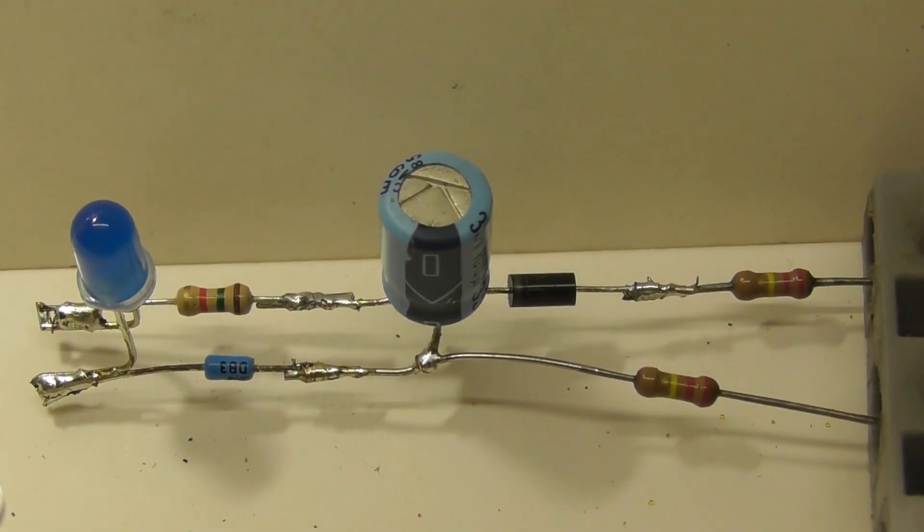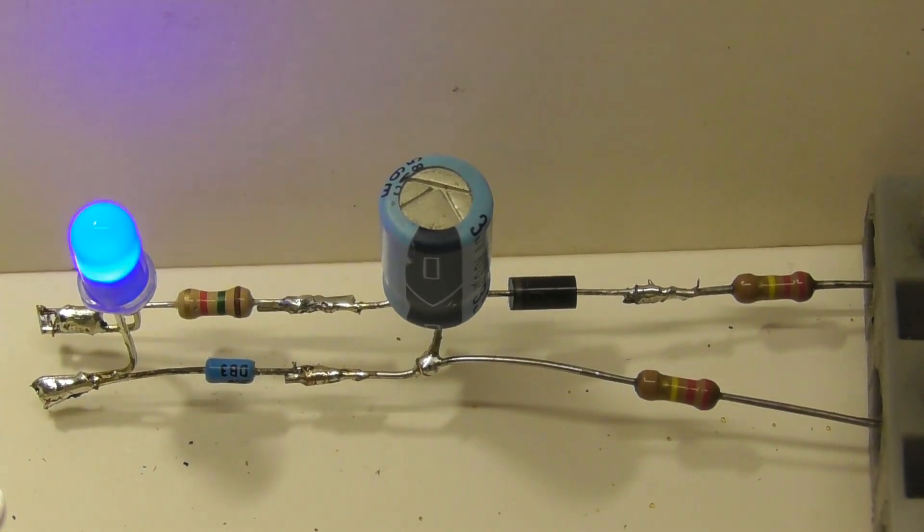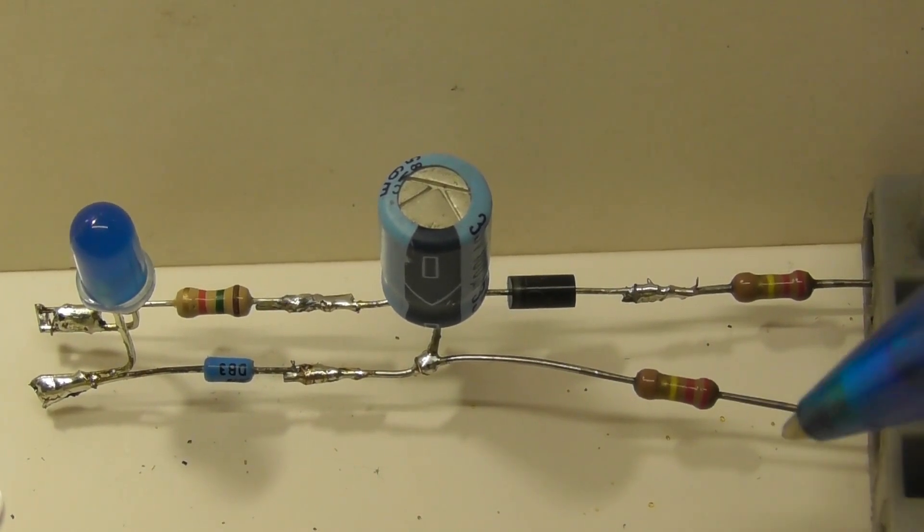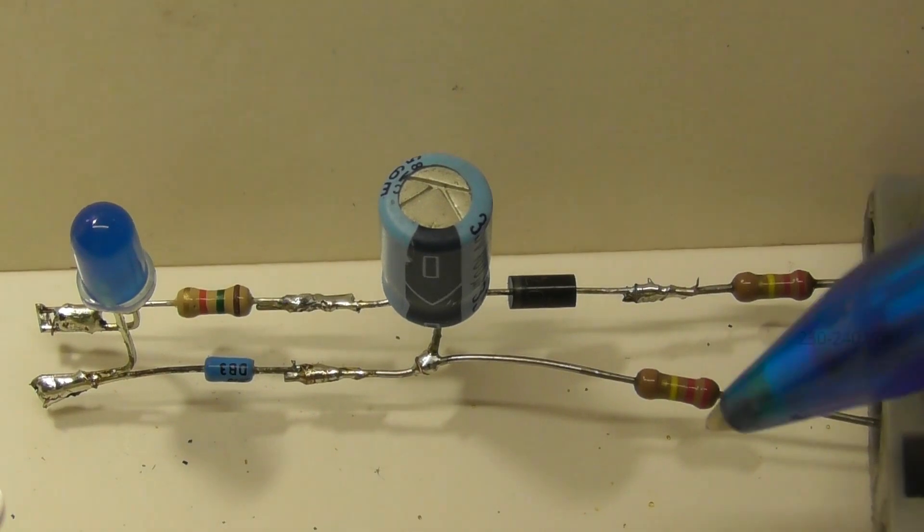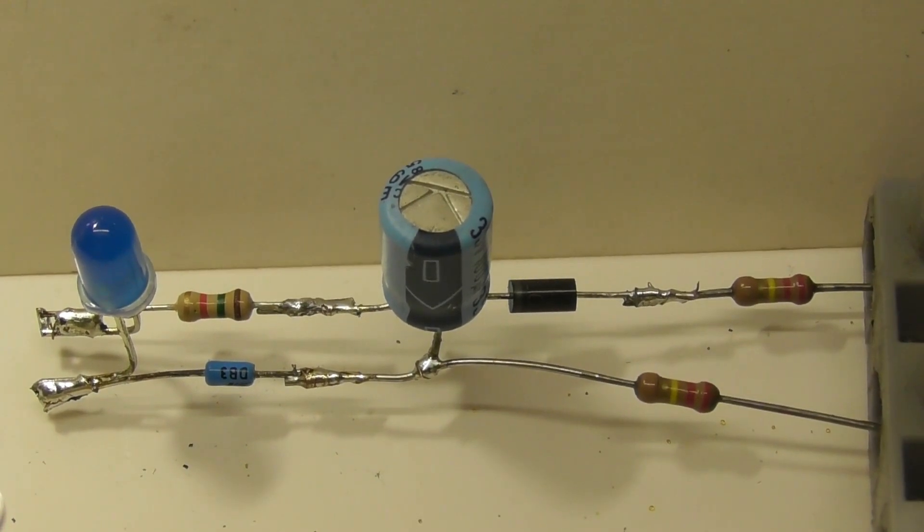The beauty of the circuit is the components are easily accessible and very cheap to build. I like to split the mains voltage, drop it down at 240 volts. So 220k ohm resistors.